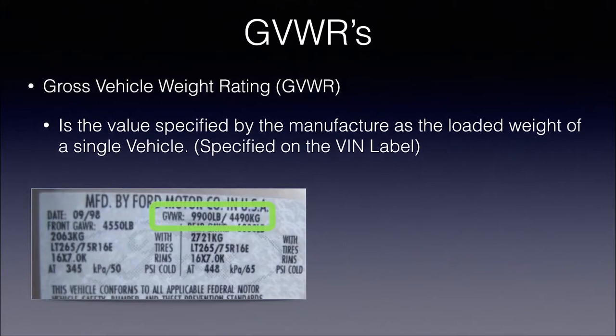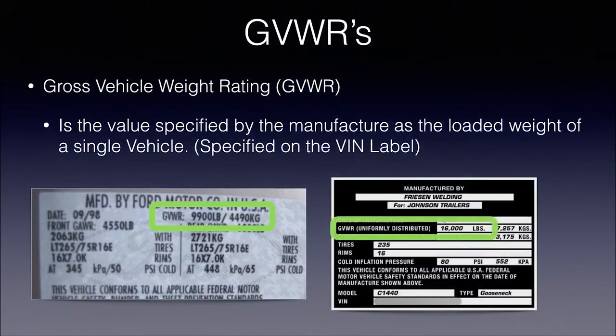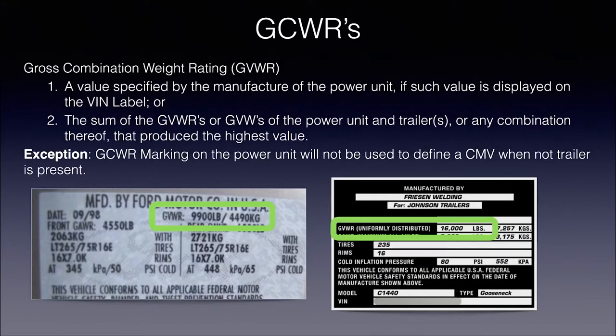Gross vehicle weight rating is the value specified by the manufacturer for the loaded weight of a single vehicle. It's found on the VIN label — go inside your door, usually on the driver's side, and you'll locate that VIN label. You're going to see some GVWRs, maybe a GAWR, and you might even see a GCWR. On this image, we have 9,900 pounds for the trailer, and in this particular trailer we see a gross vehicle weight rating of 16,000 pounds.